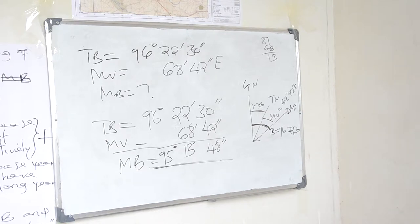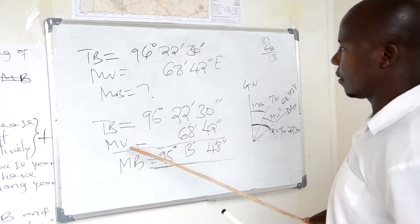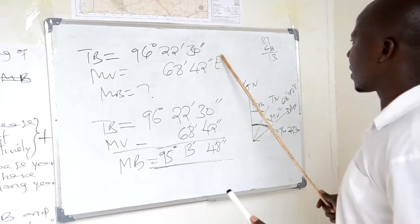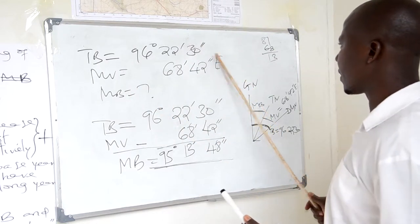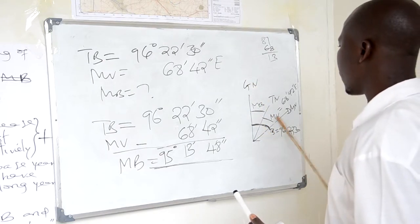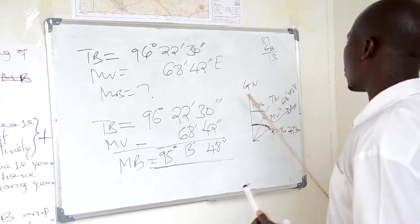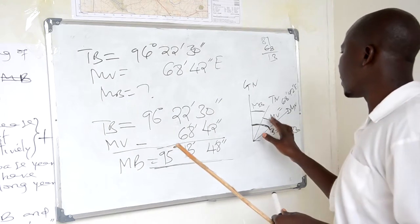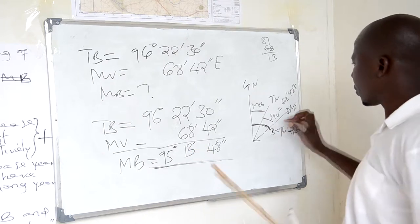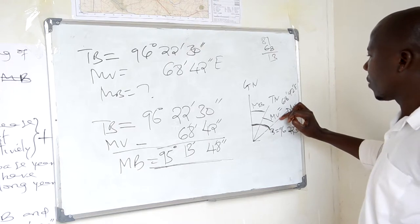I think you see what is going on. Therefore, we have to be keen to know: this was the Eastern parts. Wherever it will be Eastern parts, the true bearing will be the greater one. In order to obtain others, you have to sum up. So magnetic variation plus magnetic bearing gives you the true bearing.